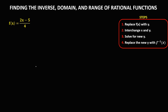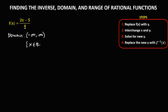We have a given rational function. First, we need to find the domain. Since there is no variable in the denominator, the domain is from negative infinity to positive infinity — the set of all real numbers, or the set of all x such that x is an element of the real numbers.